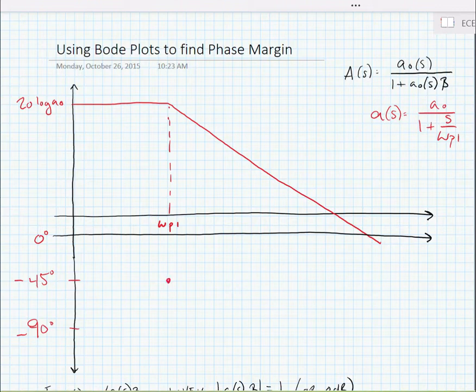We can also draw the phase response. We know that at omega p1 the phase shift of the single pole amplifier will be exactly minus 45 degrees. At 10 times this frequency, we assume the phase shift will go to 90 degrees, and at 10 times less than this, we assume the phase shift will be 0 degrees.